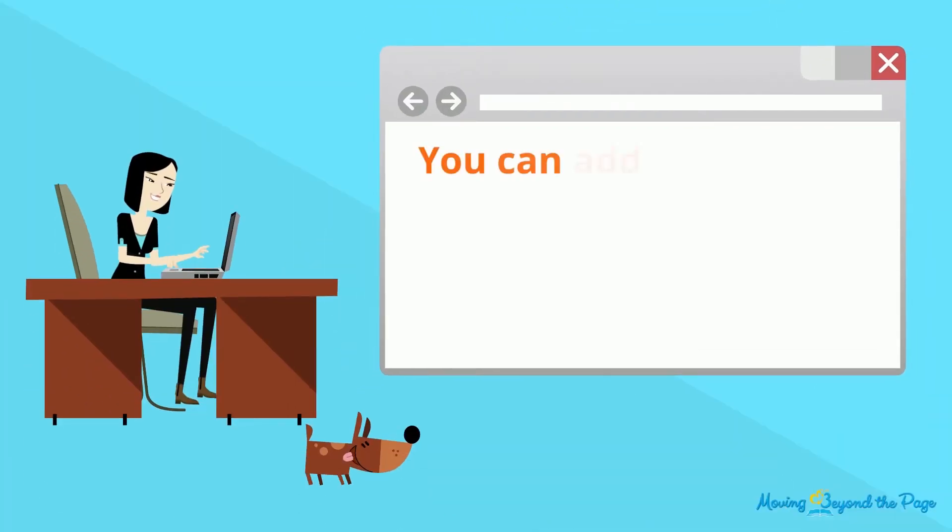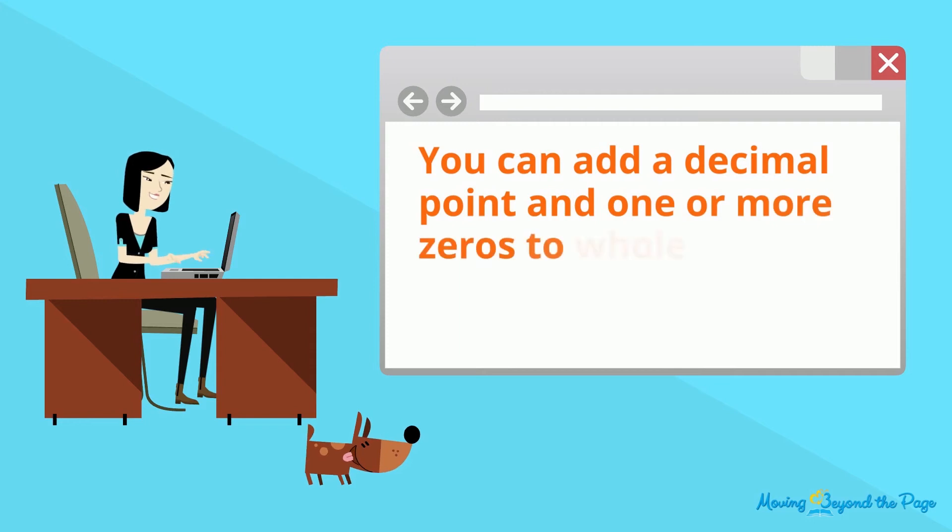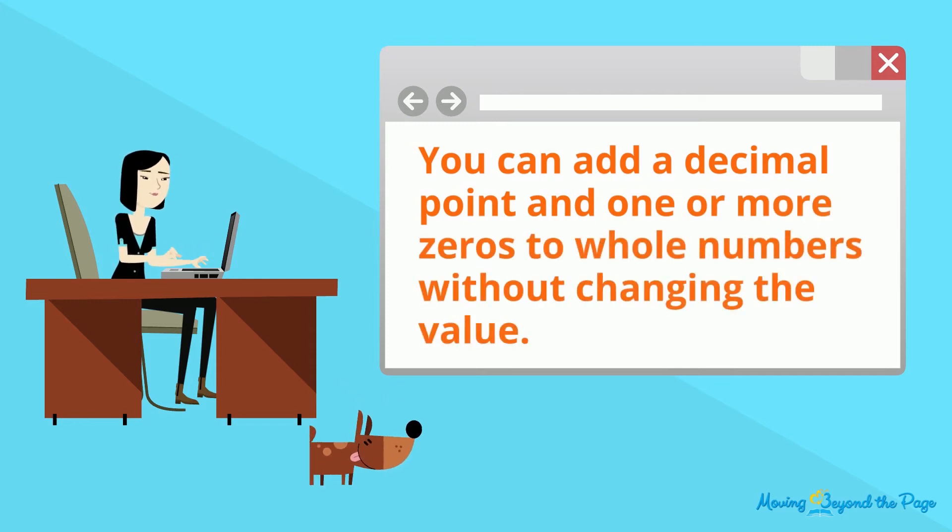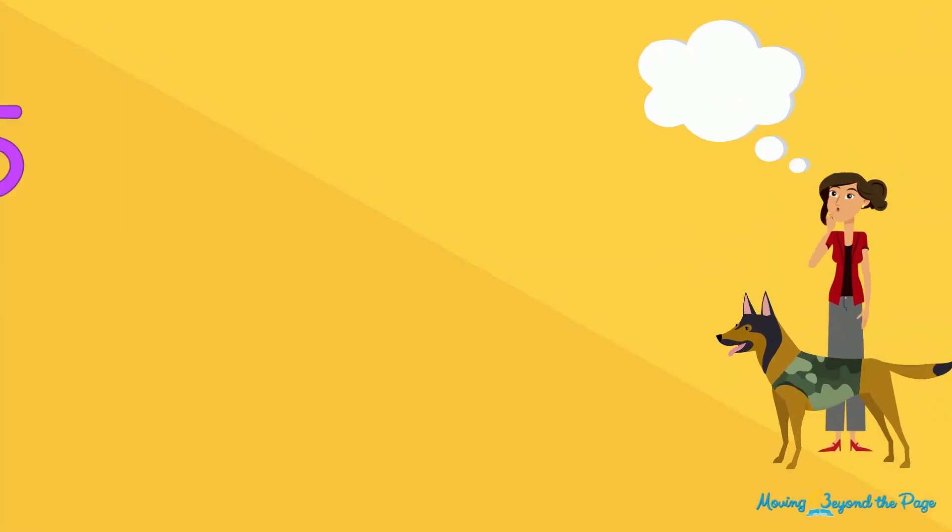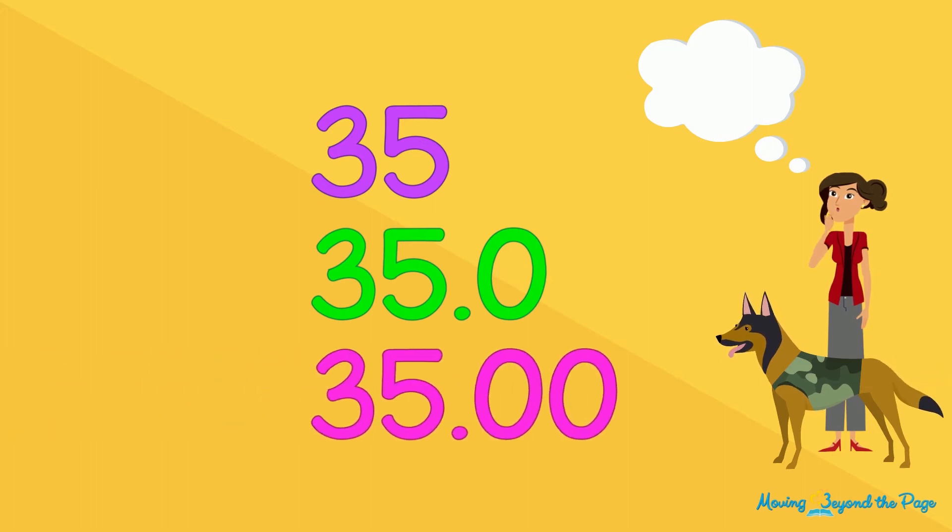In Unit 1, you learned that you can add a decimal point and one or more zeros after a whole number without affecting the value of the number. For example, 35, 35.0, and 35.00 all equal 35 because each of these numbers has 3 tens, 5 ones, 0 tenths, and 0 hundredths.